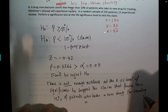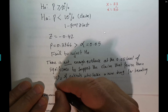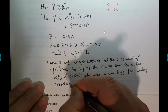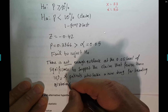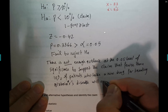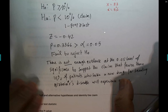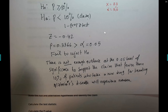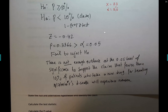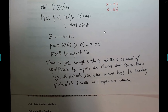We cannot support their claim. That means their claim is probably not valid — they said less than 10% but it could be more than 10%. When you don't support their claim, that means their claim is suspicious. This is how we do hypothesis testing on proportions.